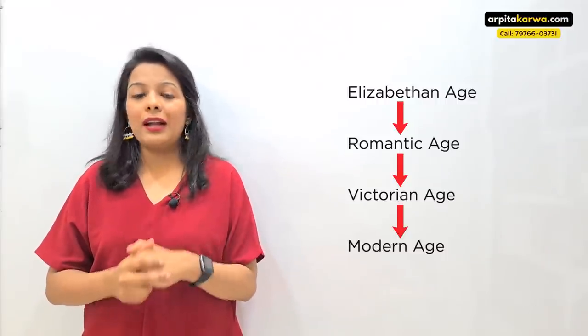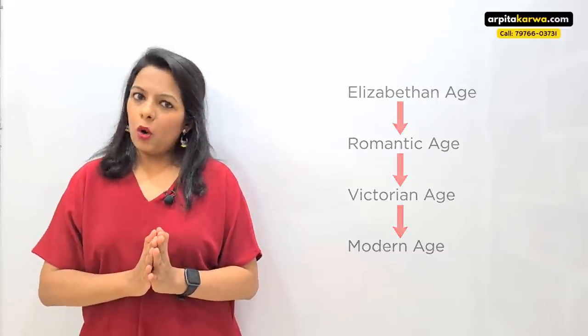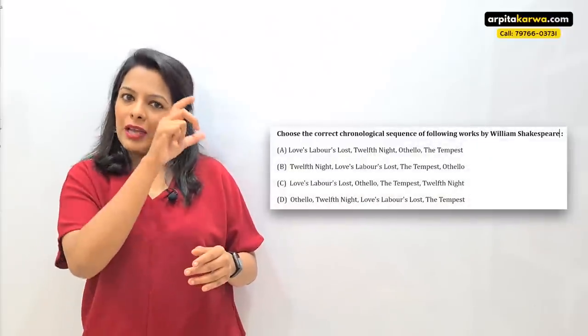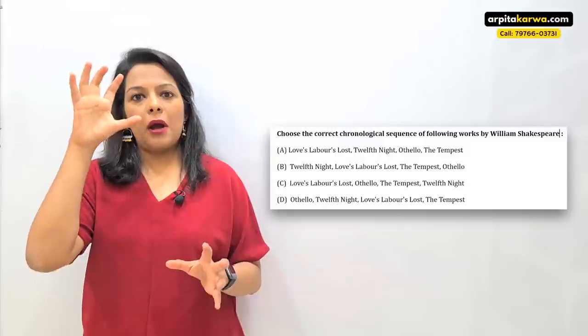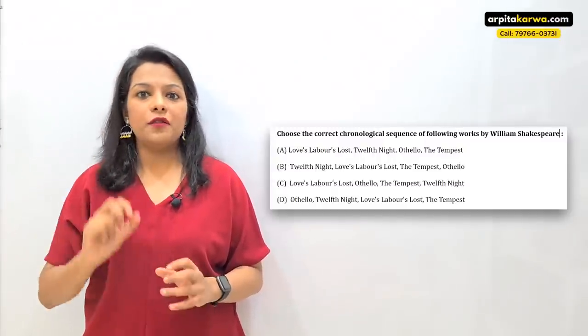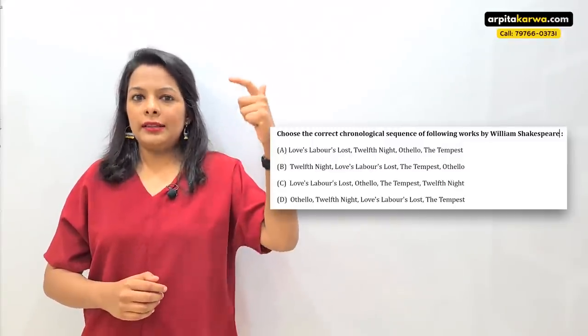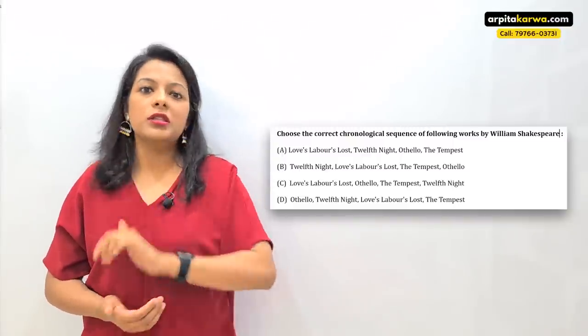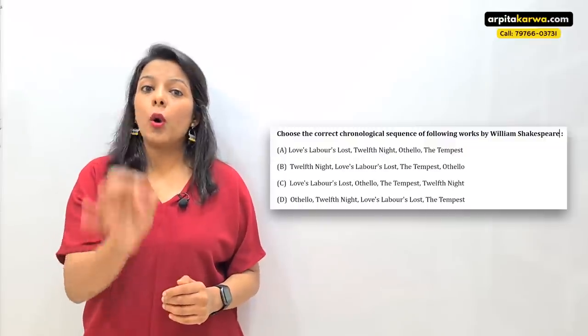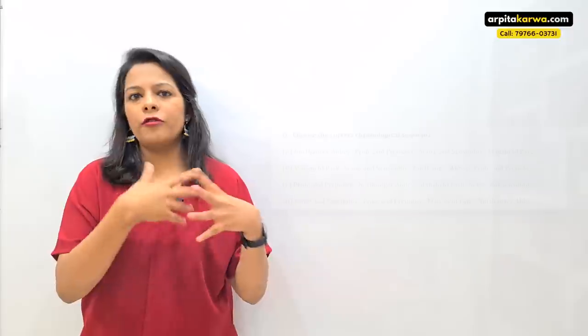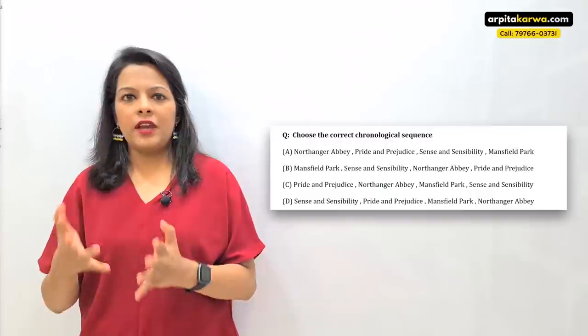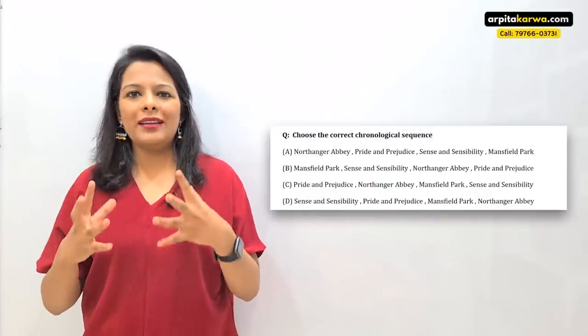The second type of question is when they give you four works of the same writer and ask you to arrange them chronologically — for example, four novels by Jane Austen. If you've written your notes in chronological fashion as displayed on screen, you'll find that the first section of notes talks about her first work, then the second, then the third, then the fourth. If you remember the picture of that notebook in front of your eyes on the day of the exam, you will easily be able to arrange them correctly even without knowing a single publication date.